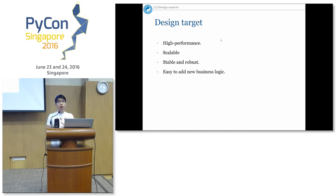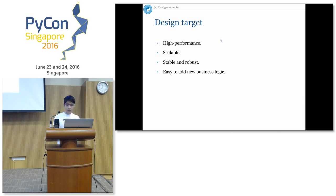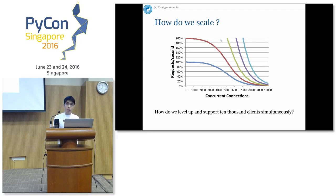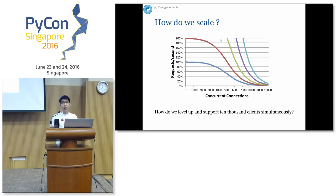Let's move to the design target. What do we want from our TCP server? The four most important points: we want high performance, but also scalability; it must be stable and robust; and it must be very easy for developers to add their business logic. We want a scalable server — but how?